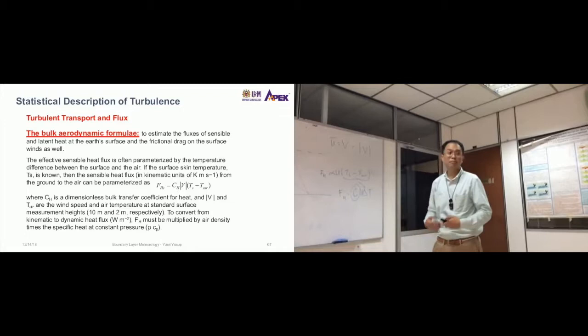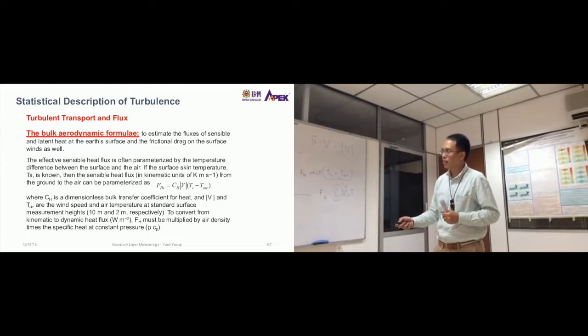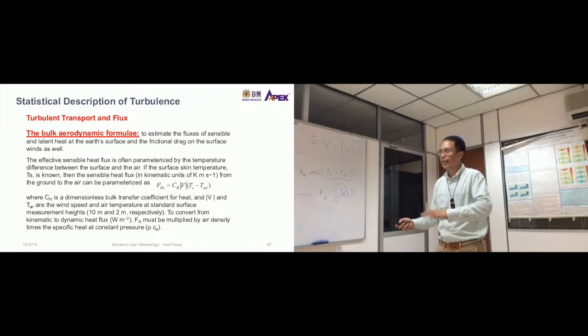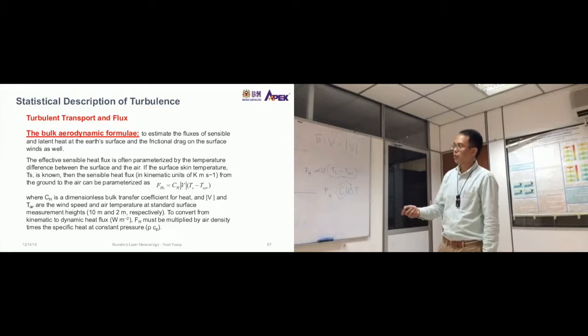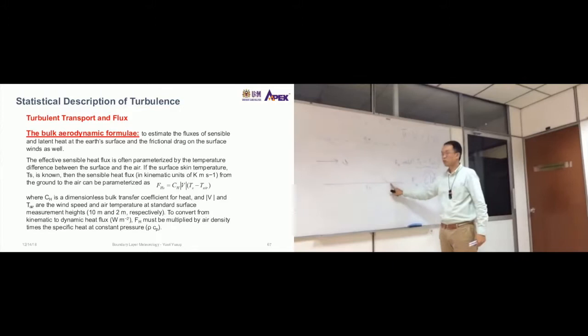The air, the wind speed and air temperature, at standard surface measurement heights. There are standards—here are the standards of heights that you use to measure temperature. The most common is 10 meters and 2 meters. If you want to measure at the ground, like remember this one, TS, is at the skin. Then you put it at 2 meters.